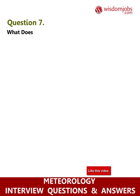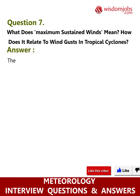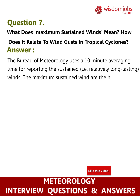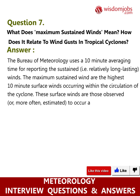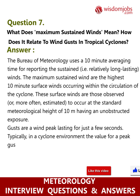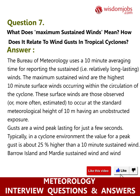Question 7: What does maximum sustained winds mean and how does it relate to wind gusts in tropical cyclones? The Bureau of Meteorology uses a 10-minute averaging time for reporting the sustained — i.e., relatively long-lasting — wind. The maximum sustained wind is the highest 10-minute surface wind occurring within the circulation of the cyclone, observed or estimated at the standard meteorological height of 10 meters with unobstructed exposure. Gusts are wind peaks lasting just a few seconds; typically in a cyclone environment, the peak gust value is about 25% higher than the 10-minute sustained wind. Barrow Island and Mardie sustained wind and wind gust profiles during TC Monty (2004) illustrate this.